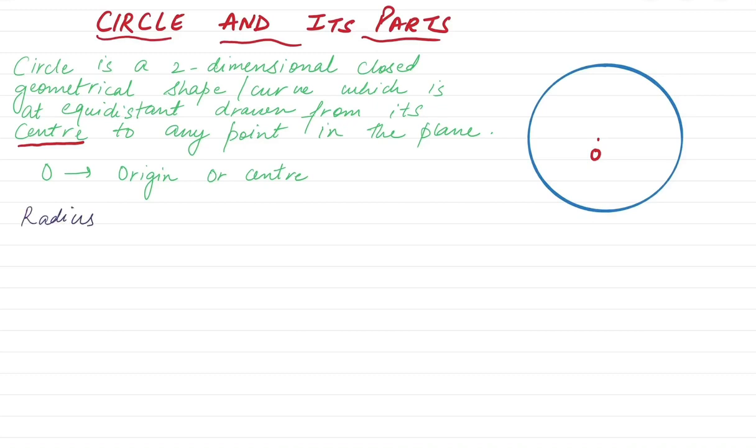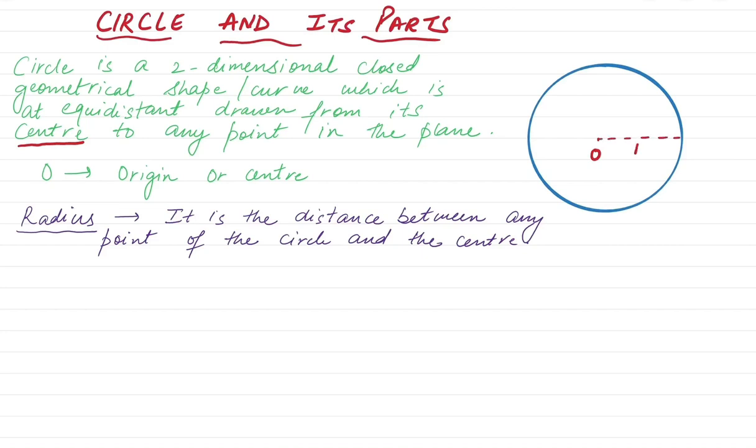Now what is the radius of the circle? Radius is the distance between any point of the circle and the center. So from the center let's draw the radius of the circle. This is taken as small r. So the symbol for radius is small r.